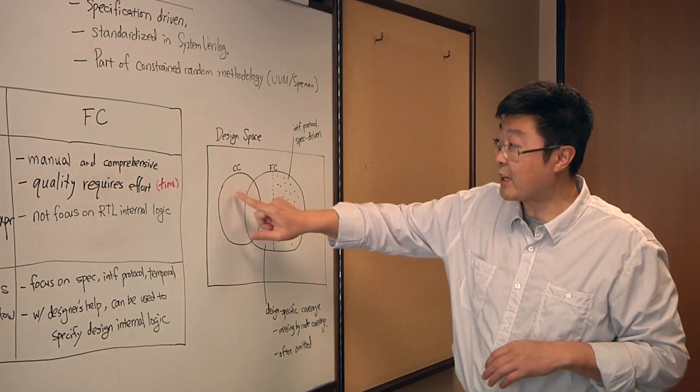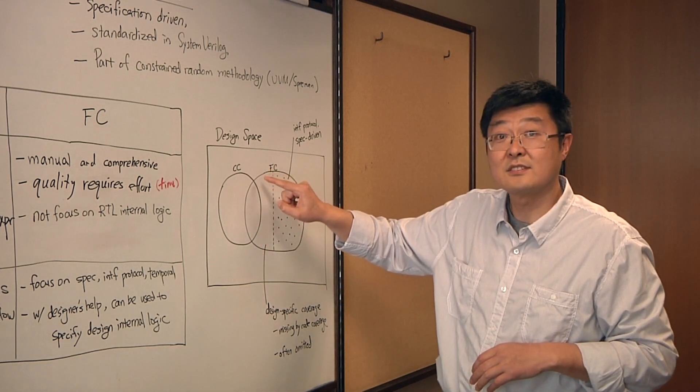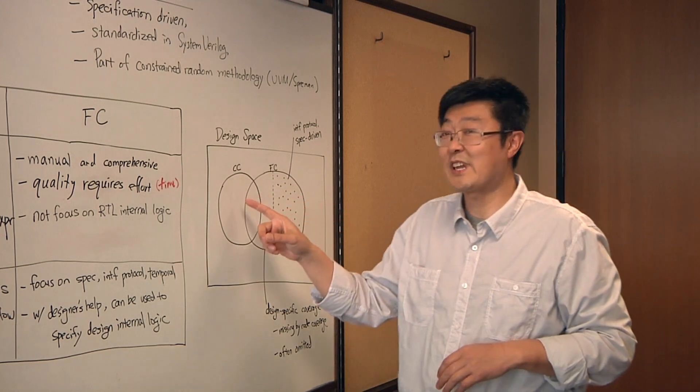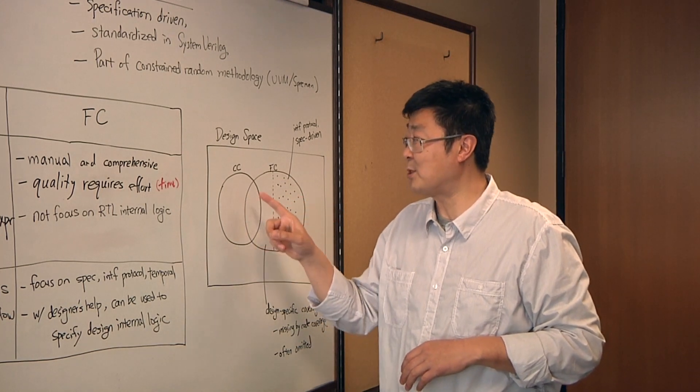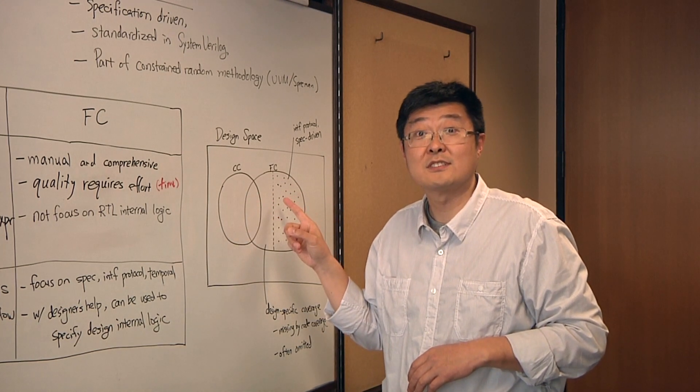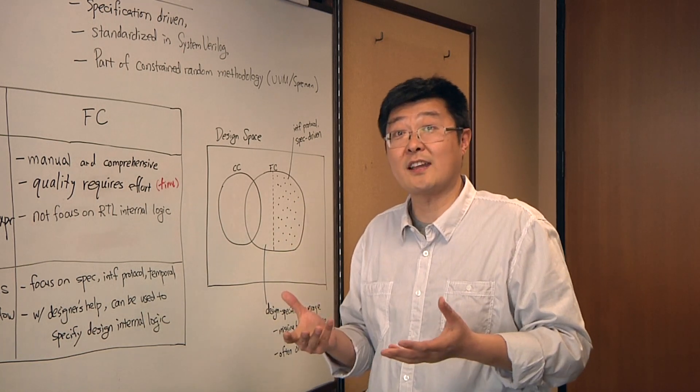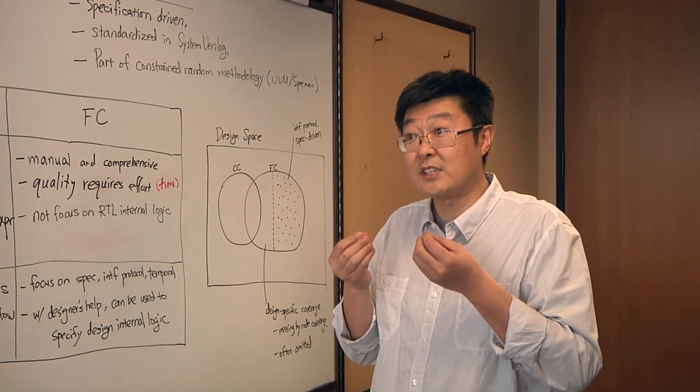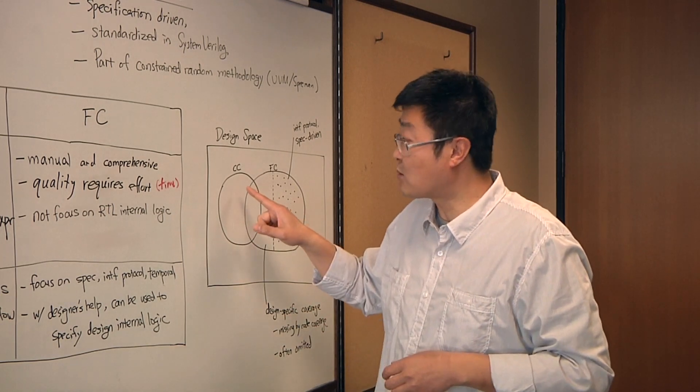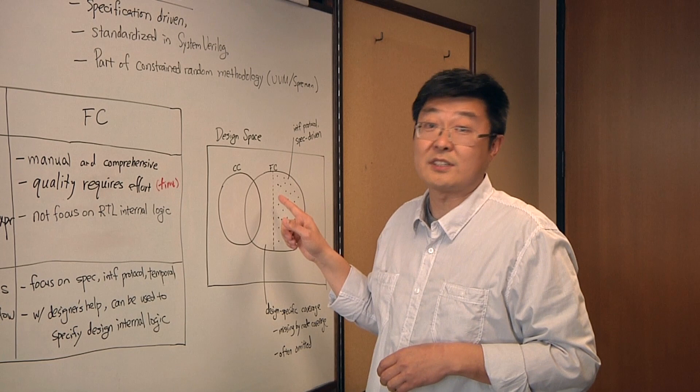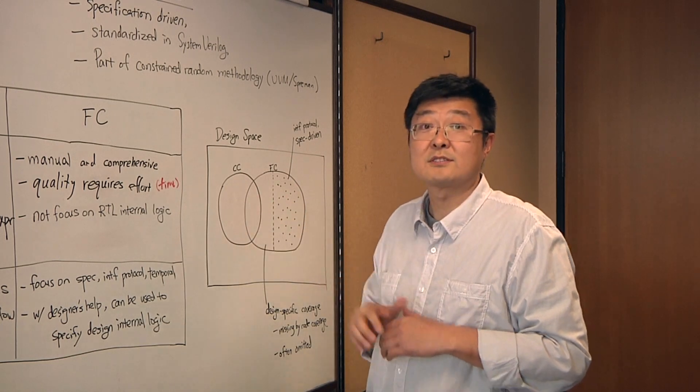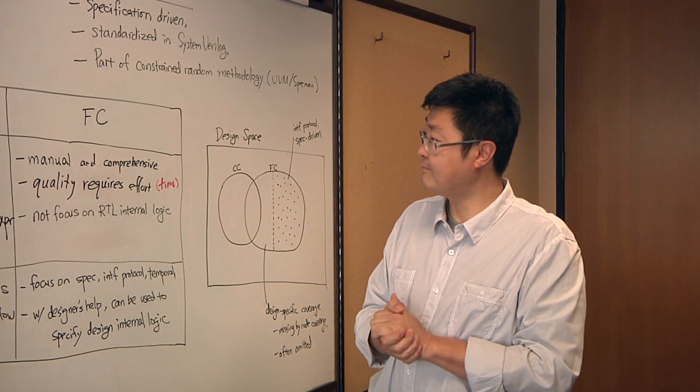They are missed by code coverage, which is this part. At the same time, of course, you can imagine there will be a joint part between code coverage and functional coverage. I'll give you one example: let's say you have an instruction in the CPU design. Different instruction opcodes can be described in both code coverage and functional coverage. That will fall into this part.